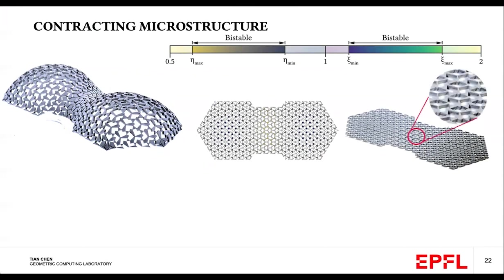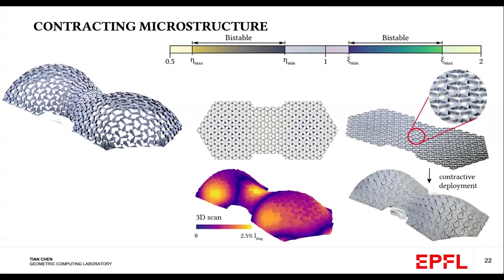And we fabricate a similar double bump to demonstrate this. Note that in the flat state, these cells are pre-opened. And by contractively deploy this, we obtain a non-porous 3D state.